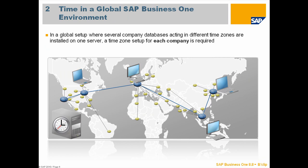If you want to use Business 1 in a global environment, you have some advantages with version 8.8. In this scenario, you can see the headquarter has the server and there are different locations in different time zones, each with their own company databases. With 8.8, you can now set a time zone difference between the headquarter and the different locations, setting a time zone for each company saved on your database server — so you can have different company databases on one server located in different time zones.